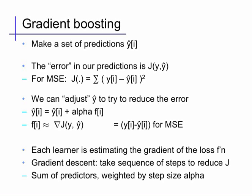For mean squared error, which is what my previous example was focused on, this cost function is the sum over the data points of yi minus y-hat i squared. And so now we can try to think about adjusting our prediction y-hat to try to reduce this error. So the gradient of J with respect to the predictions y-hat is just solved by taking the derivative with respect to all the predictions.